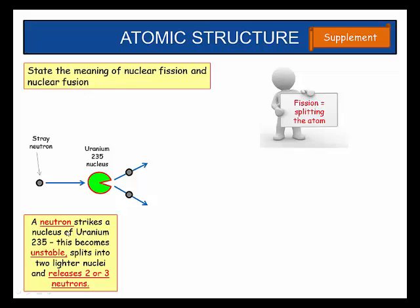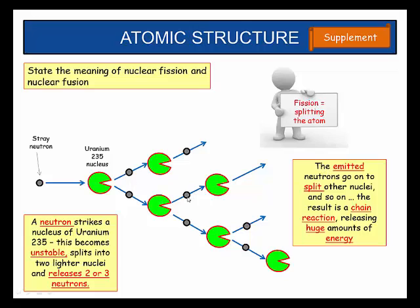What we've got is a neutron — here's a stray neutron — and here's a uranium-235 nucleus. This neutron strikes it with such force that it splits it. The uranium-235 becomes unstable and splits into two lighter nuclei, releasing two or three neutrons. These emitted neutrons then go on and split other uranium-235 nuclei, and they split others and so on — so what we've got is a chain reaction.